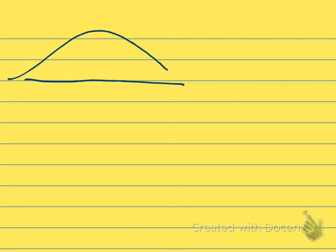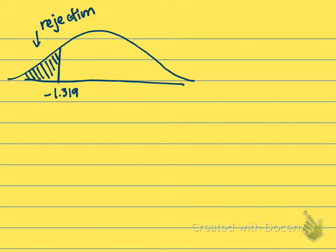Let me draw out our normal distribution. And so this is where we're going to put that negative 1.319. And so this blue shaded region here to the left, this is what we call the rejection region. If we find a t in that region, then we will reject it.